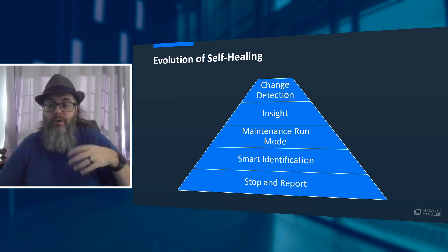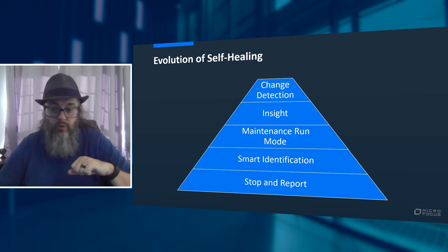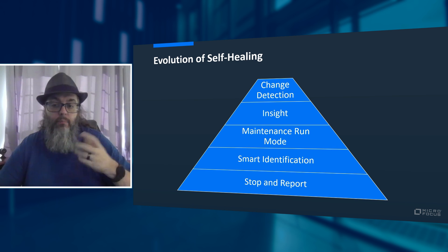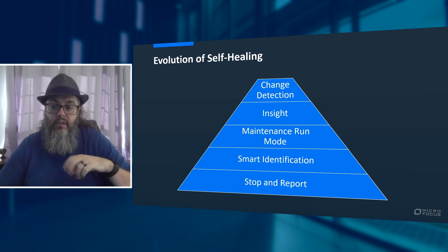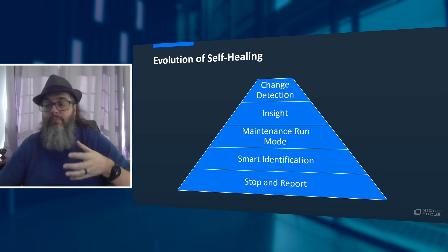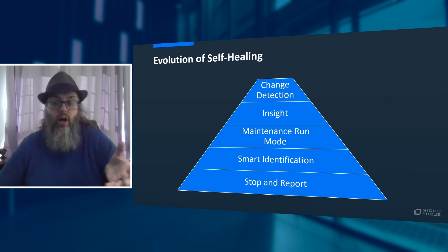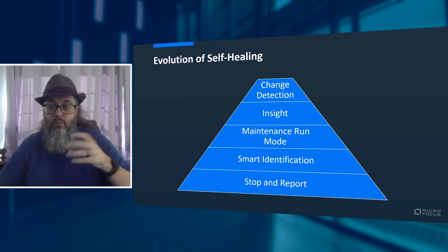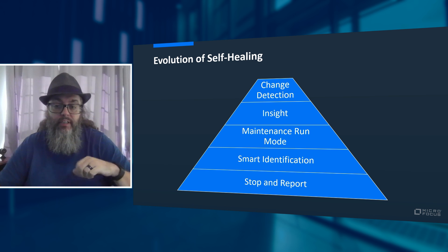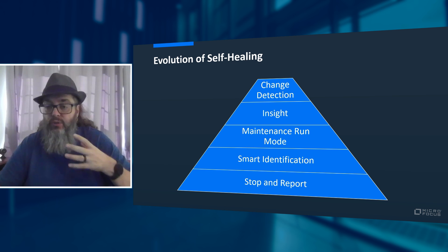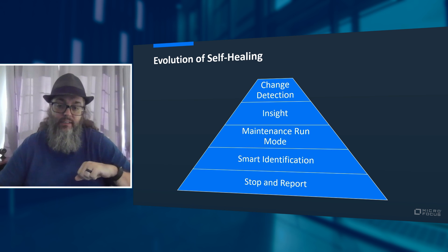In the next generation, we introduced the concept called change detection mode within our packaged applications kit for BPT, or business process testing. Essentially, this would scan the screen of not just the objects being declared to be acted against, but also looking for changes, including additions or deletions of objects on the screen, and then prompt the user to act on that, and automatically update the object repository and the script itself based on the selection the user makes in the wizard. To my knowledge, we're still the only vendor to provide this level of capabilities, where we can automatically update the script based on the change to the business process within the script.